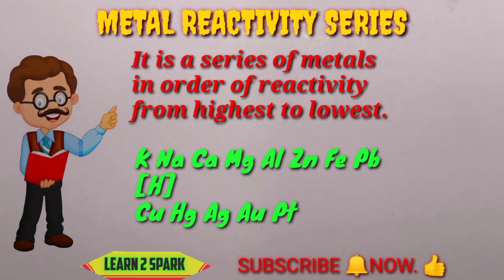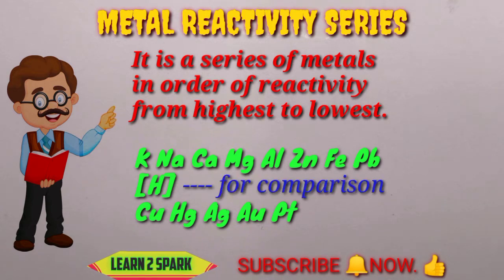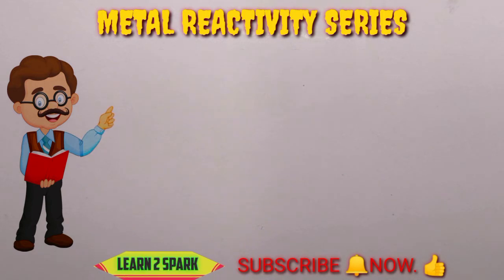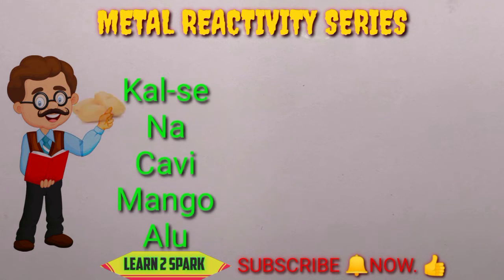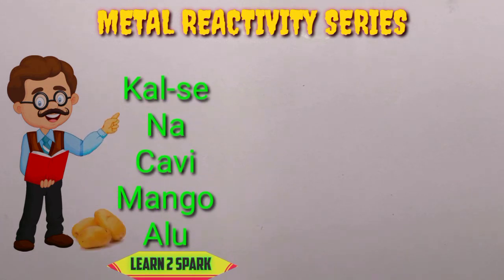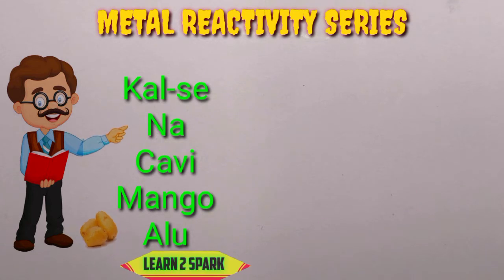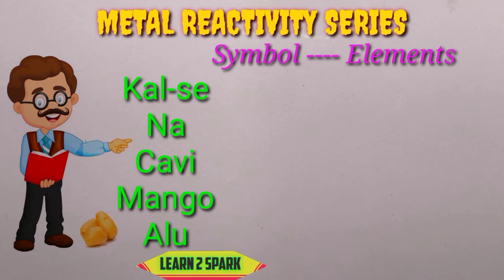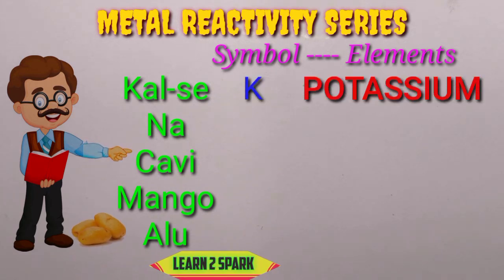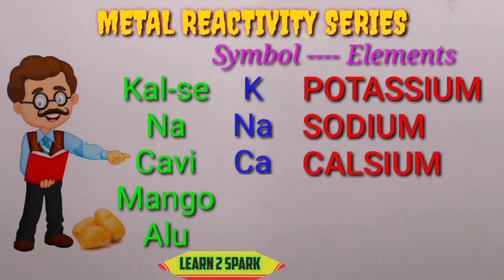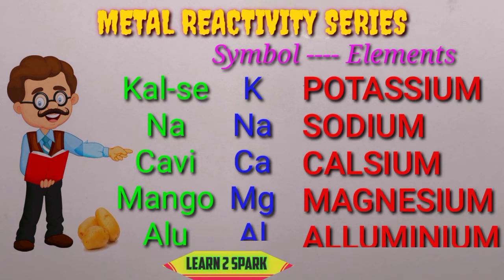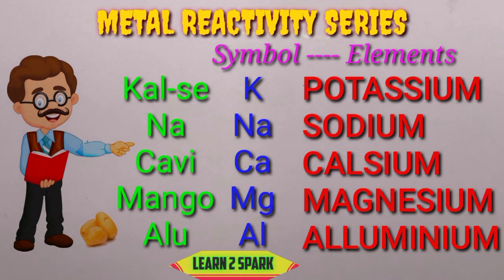We can memorize this using some life lessons and health tips. Let's start with the health tips: 'Kal Se Na Kabhi Mango Alu.' Alu is not good for our health when taken in excess — it eventually leads to some diseases as well. So 'Kal Se Na Kabhi Mango Alu' means: Kal Se — K for Potassium, Na — Na for Sodium, Kabhi — Ca for Calcium, Mango — Mg for Magnesium, Alu — Al for Aluminium.